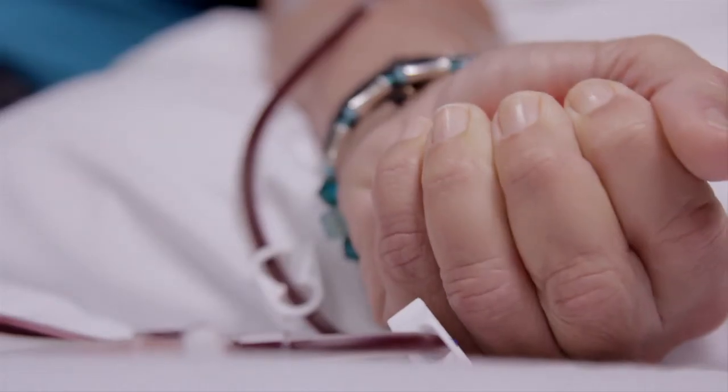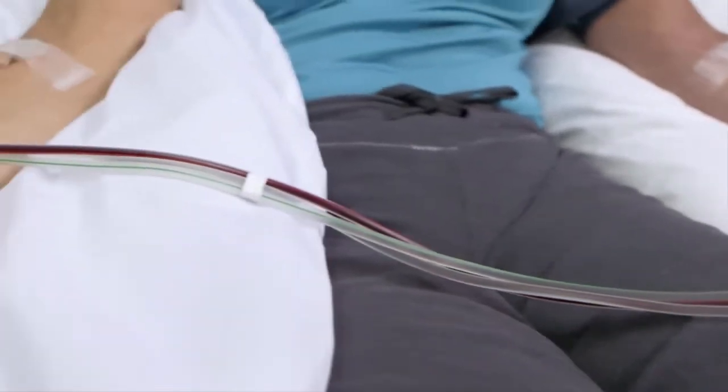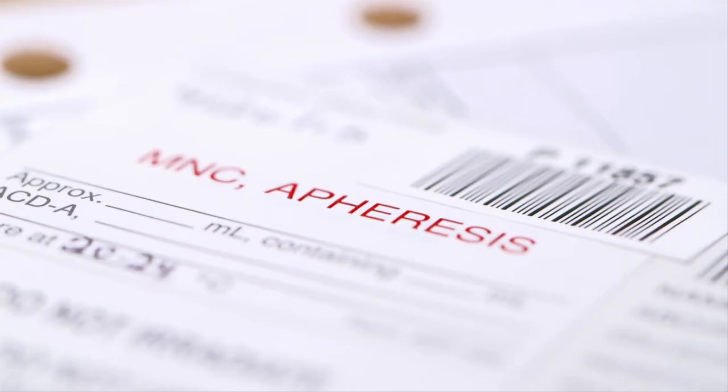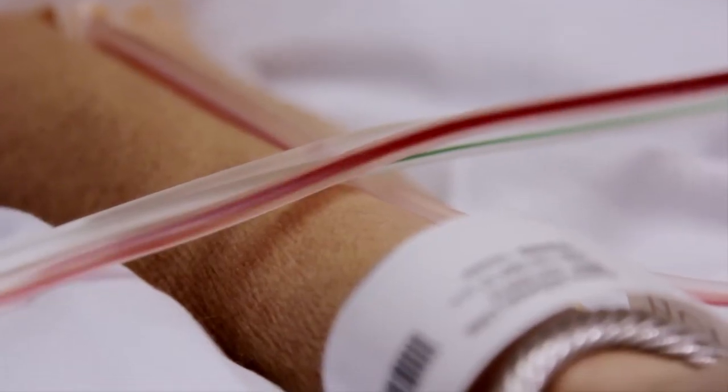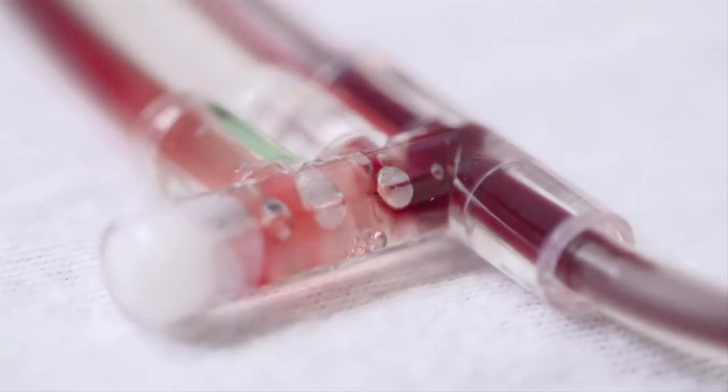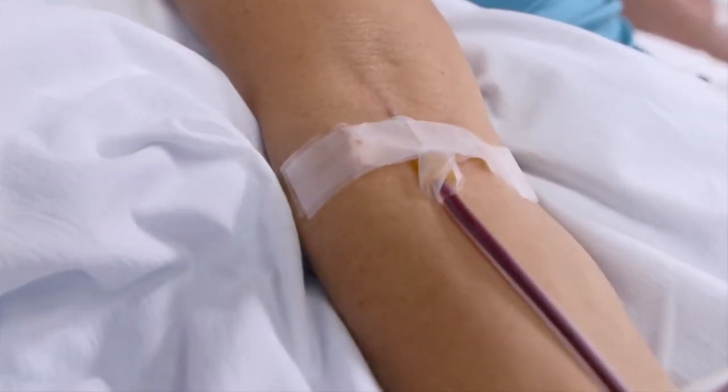The investigational treatment approach begins by removing a patient's own T cells, which are collected by a procedure called apheresis, very similar to dialysis. Blood flows out through one intravenous tube and is passed through a machine to remove some of the patient's white blood cells, while the remaining blood is returned to the body through another tube. This procedure takes about two hours.